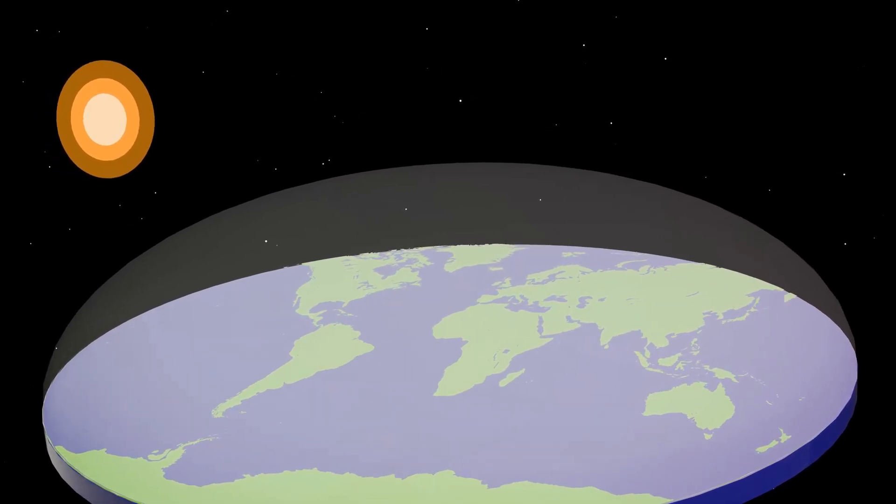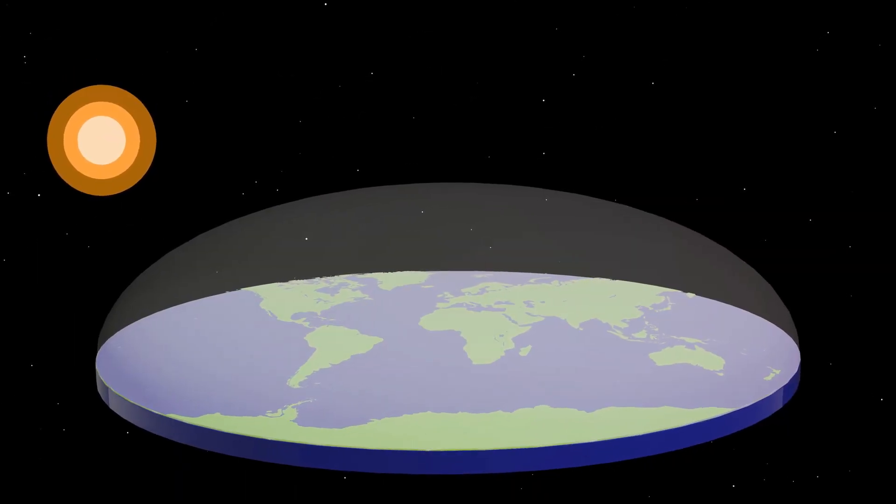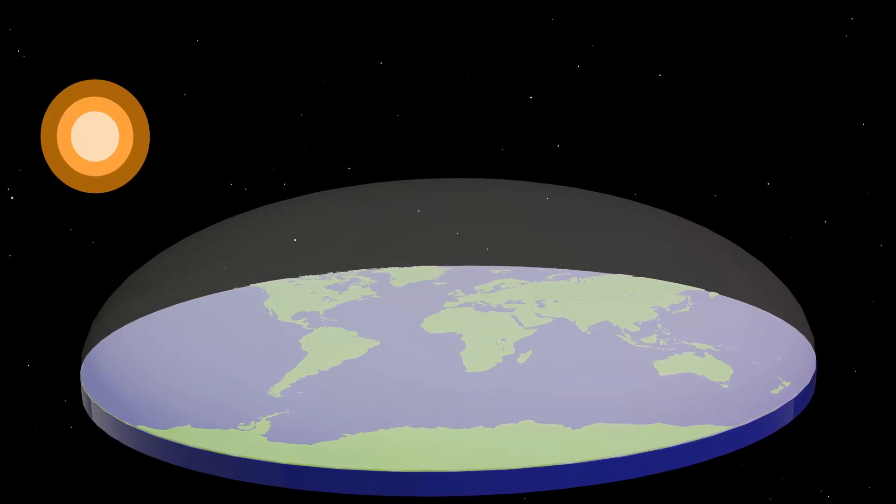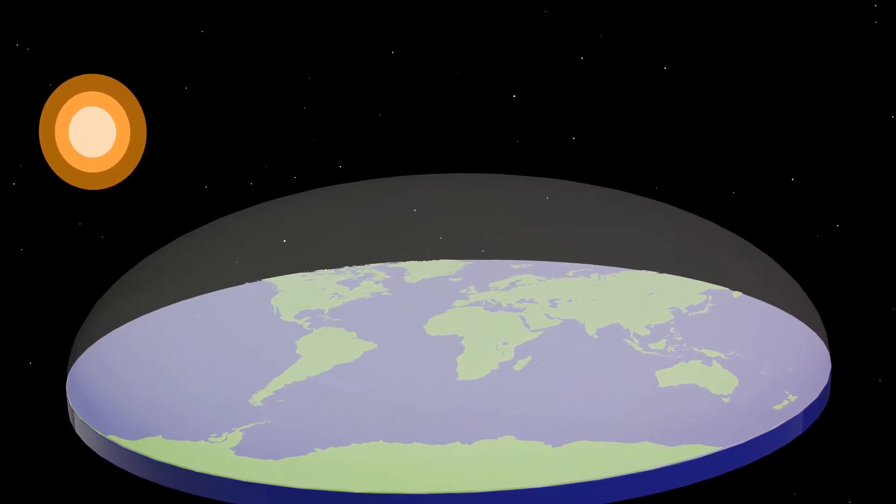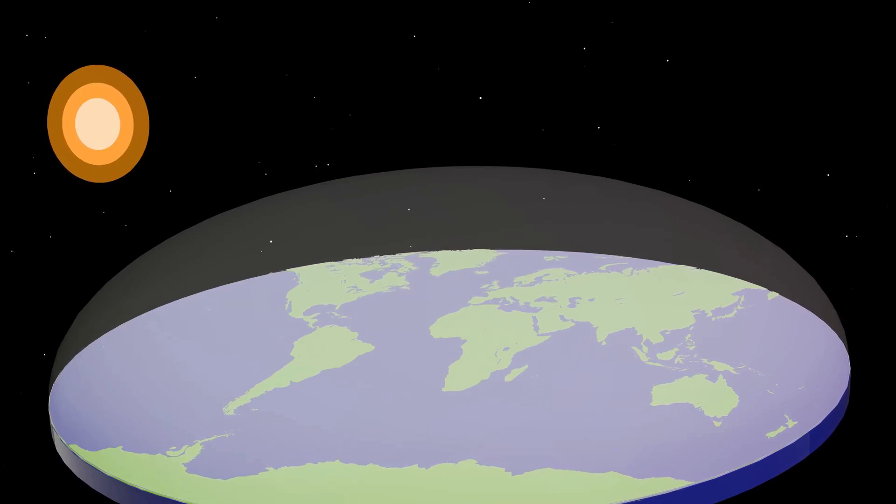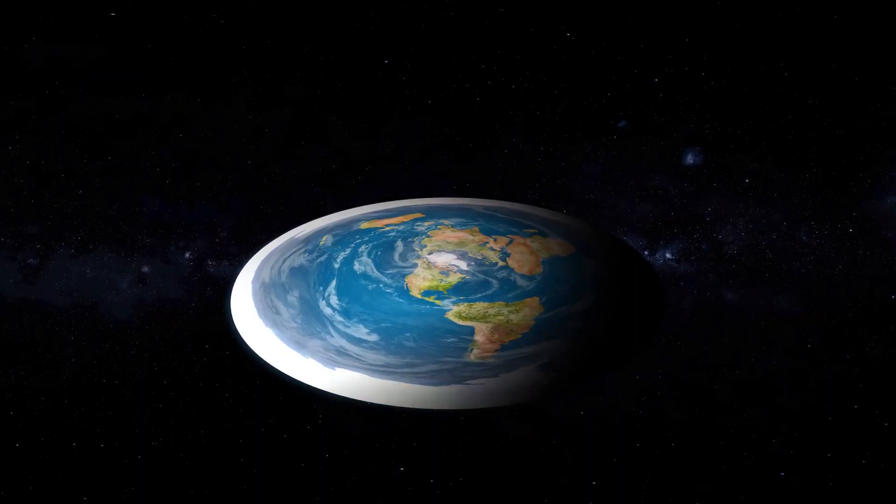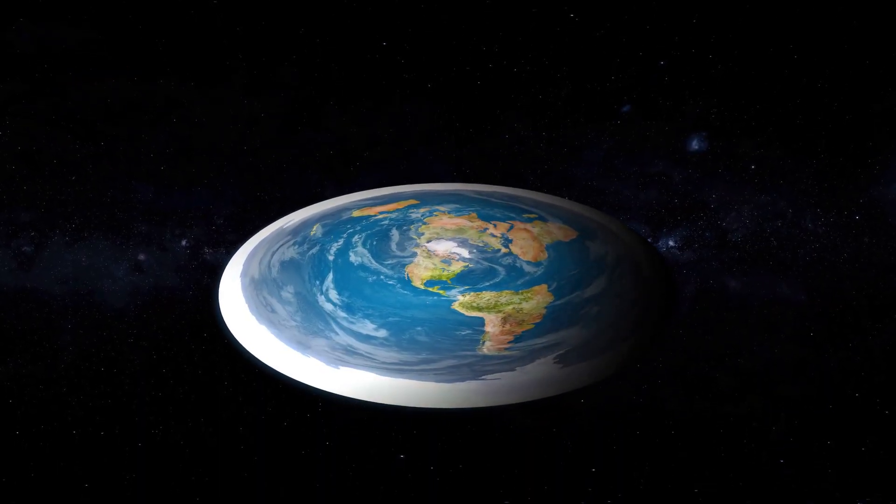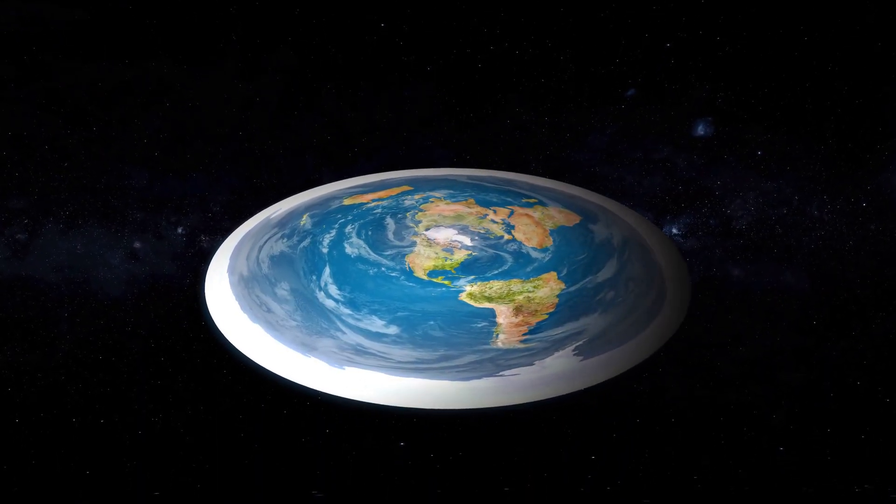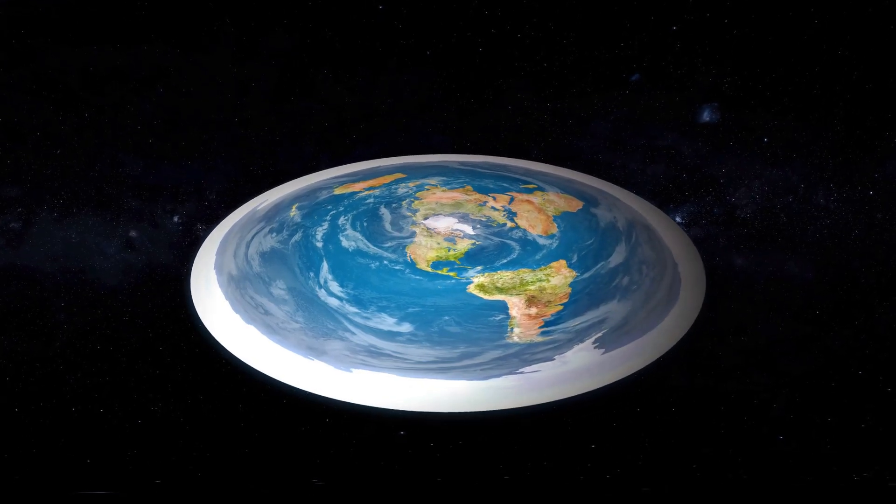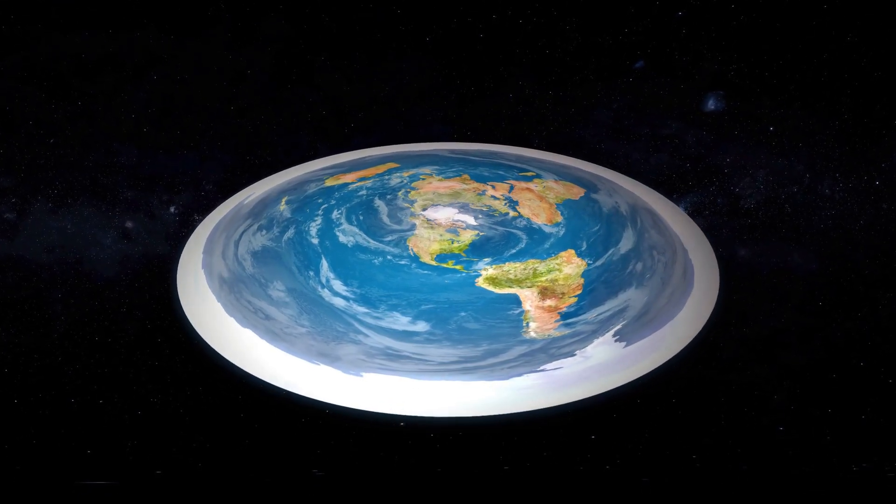Yet despite these advancements the concept of a flat Earth endured. In the early Christian era for example, certain Biblical interpretations led some to envision the Earth as a flat surface. This perspective, though not universally accepted, was notably advocated by the Christian theologian Cosmas Indicopleustes in the 6th century AD.